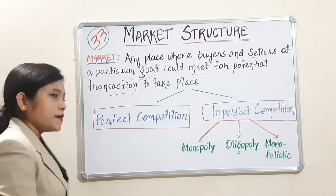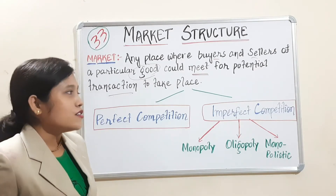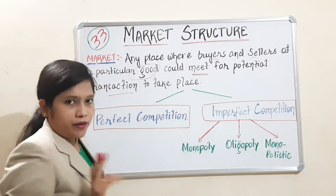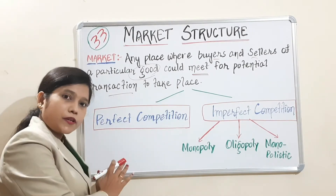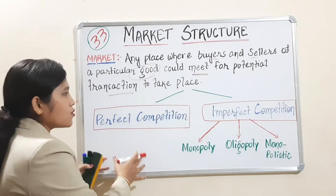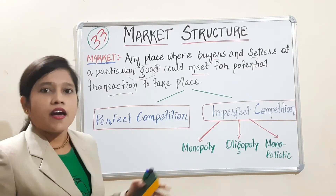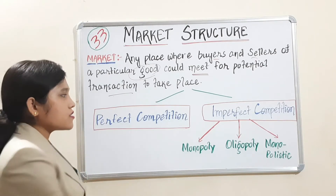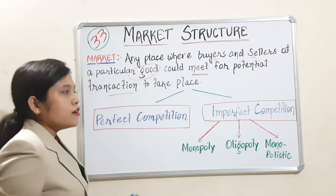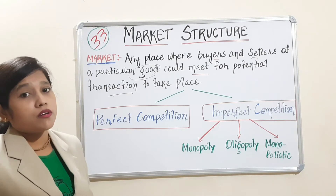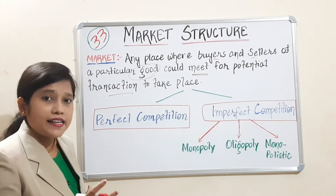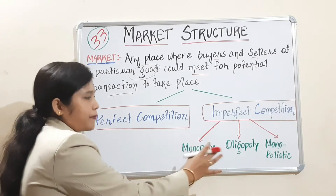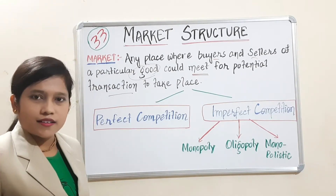Where there is a market, there will be competition. There are basically two types of competition in a market — either it will be perfect competition or it will be imperfect competition. Perfect competition means everything should be perfect. Imperfect means some perfection is not there. In this lecture, I will give a brief introduction about every type of market, and later we will deal with exactly what happens in each market structure.